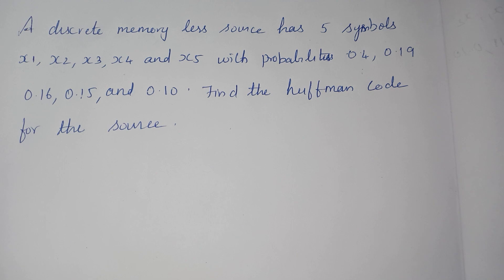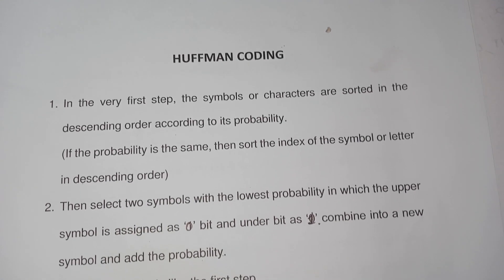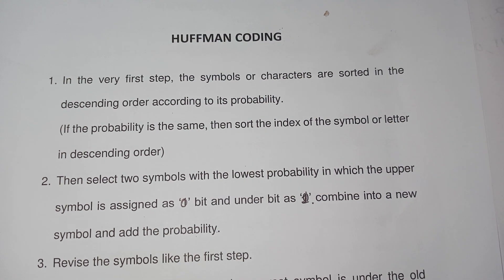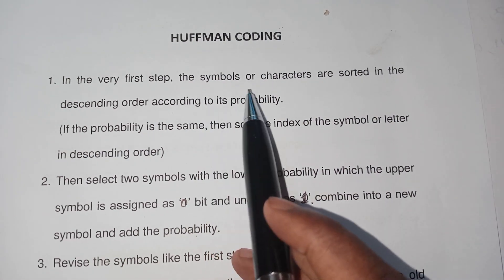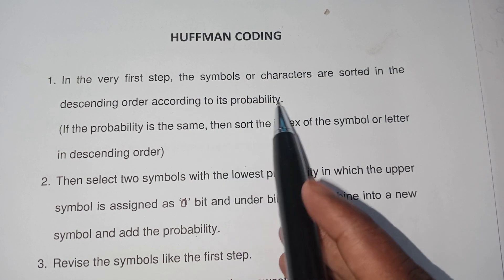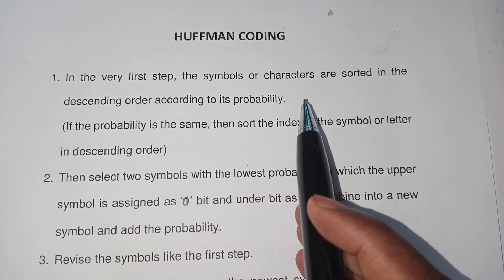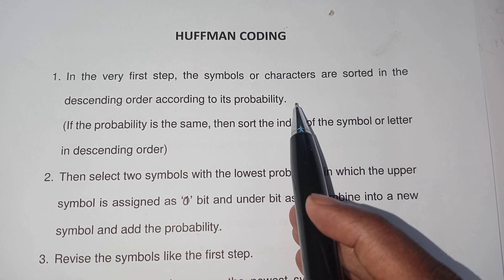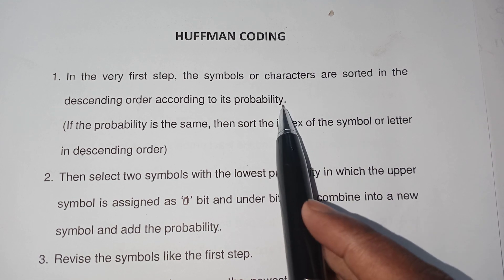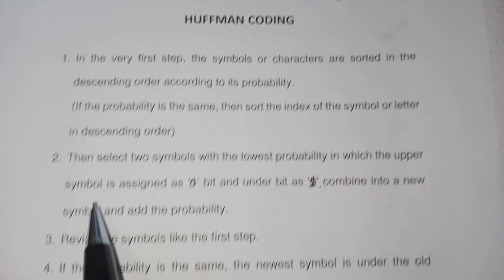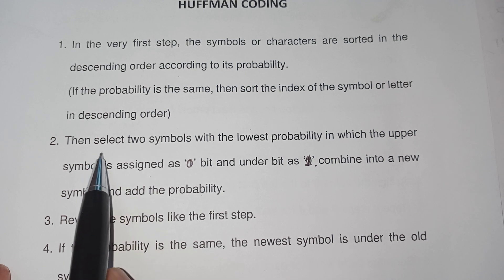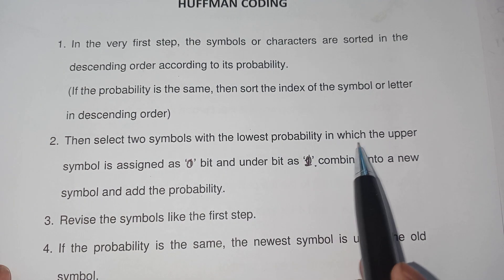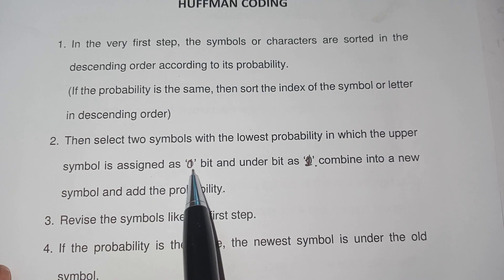Before we do this problem, I would like to highlight the steps involved in Huffman coding. In the very first step, the symbols or characters are sorted in descending order according to probability. Step two: select the two symbols with the least probability, where the upper symbol is assigned bit 0 and the lower symbol is assigned bit 1.